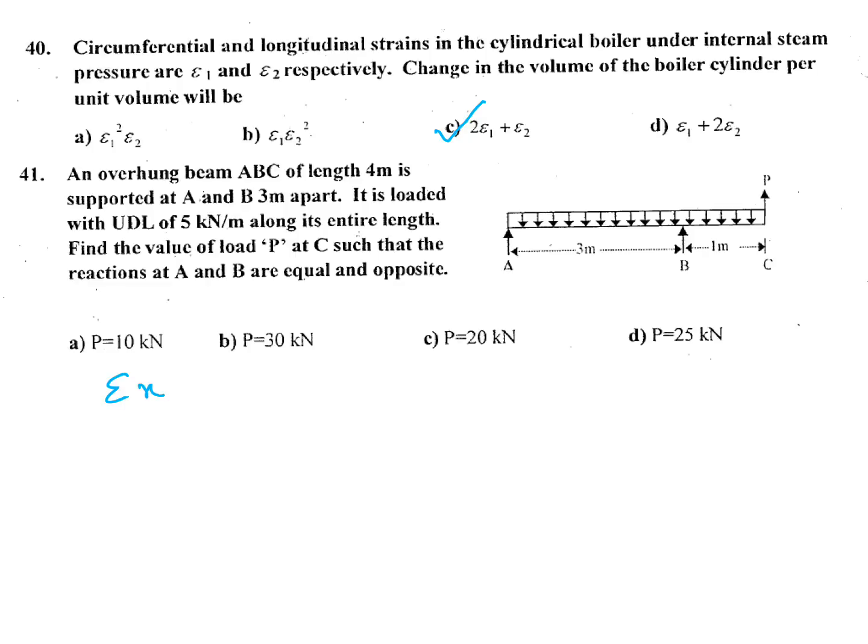So summation of all loads: RA plus RB plus P equals total UDL. In that question, reactions at A and B are equal and opposite, so RA and RB cancel. P equals total UDL. How much will it be? 5 kilonewton per meter into total distance 4 equals 20 kilonewton.